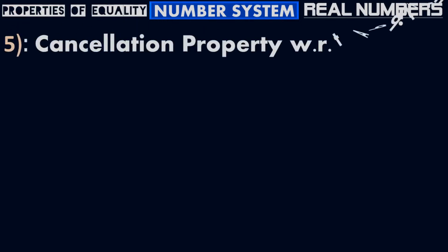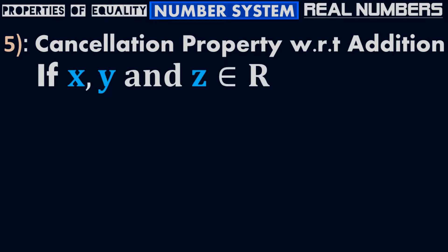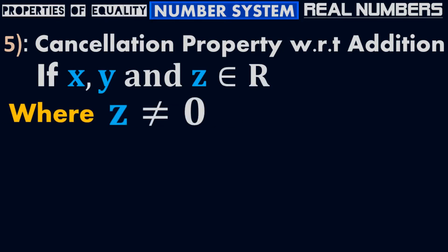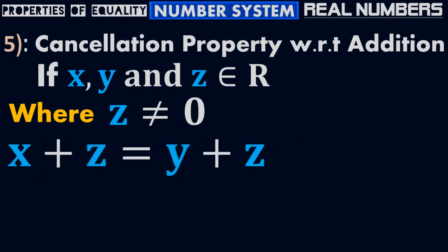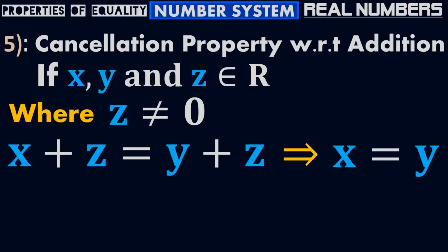Number 5: Cancellation property with respect to addition. According to the cancellation property with respect to addition, if x, y, and z belong to real numbers where z is not equal to 0, then x plus z equals to y plus z, which implies that x equals to y.